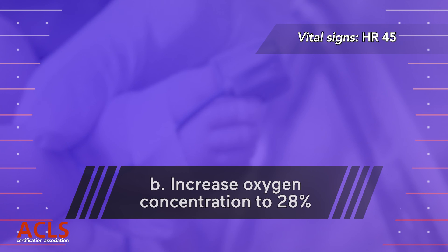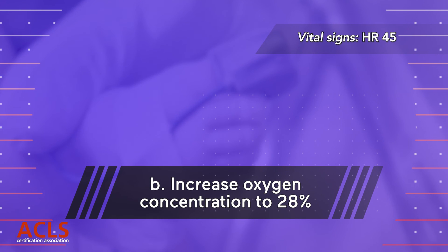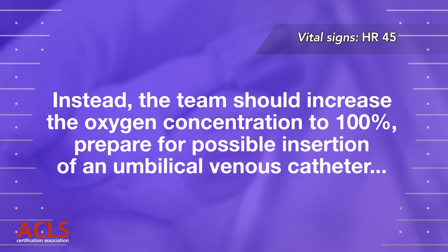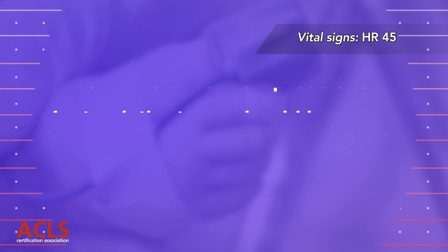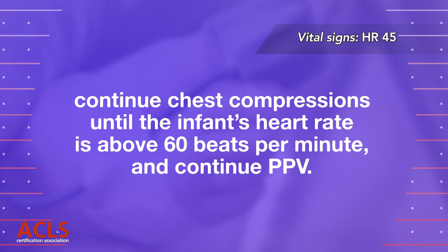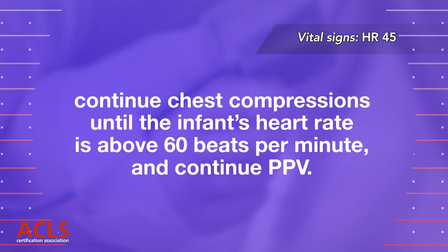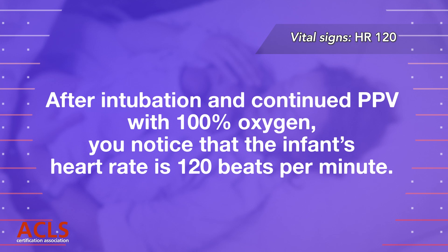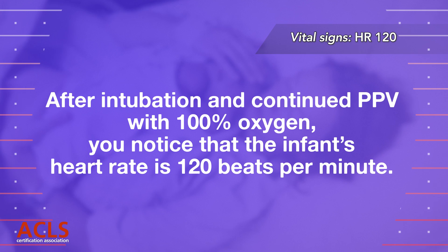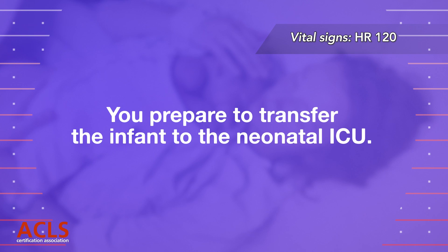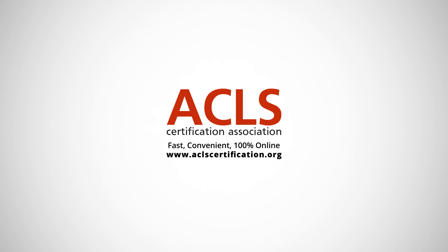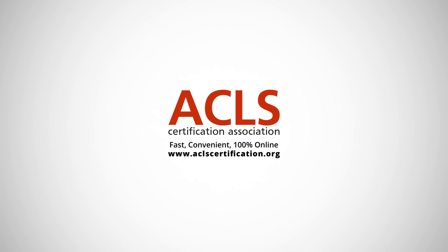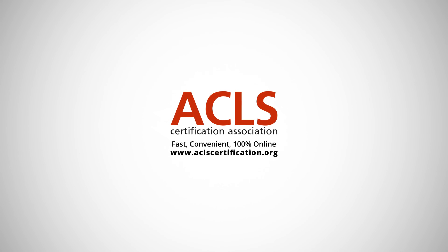Correct answer: B. Increase oxygen concentration to 28%. Instead, the team should increase the oxygen concentration to 100%. Continue chest compressions until the infant's heart rate is above 60 beats per minute, and continue PPV. After intubation and continued PPV with 100% oxygen, the infant's heart rate is 120 beats per minute. You prepare to transfer the infant to the neonatal ICU.